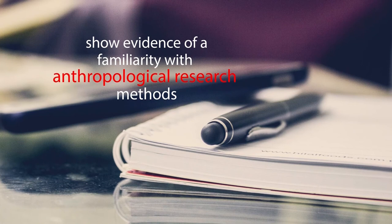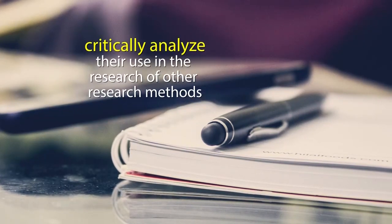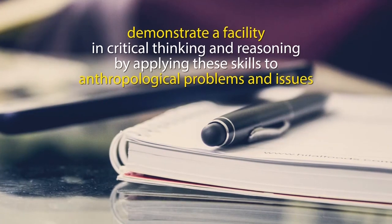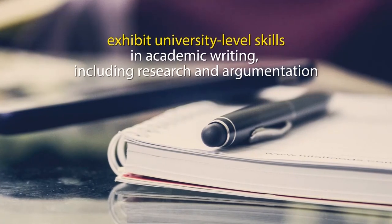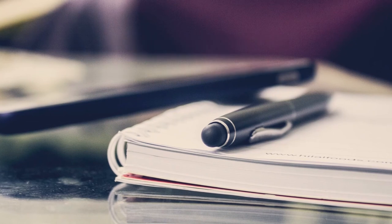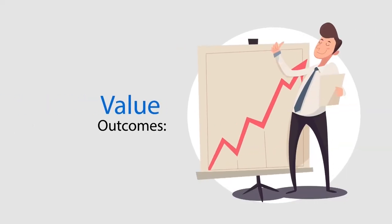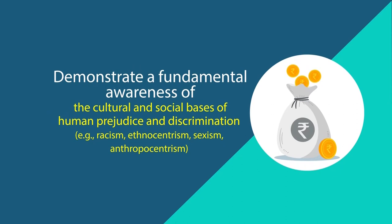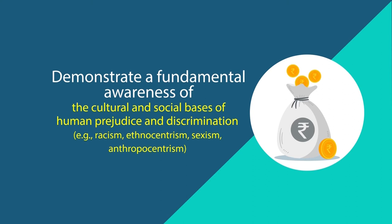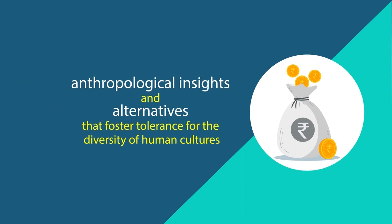Skills outcomes for the BA Anthropology program include: students should be able to show evidence of familiarity with anthropological research methods and critically analyze their use; demonstrate a facility in critical thinking and reasoning by applying these skills to anthropological problems and issues; and exhibit university-level skills in academic writing, including research and argumentation. Value outcomes include: students should be able to demonstrate a fundamental awareness of the cultural and social basis of human prejudice and discrimination — for example, racism, ethnocentrism, sexism, anthropocentrism — and anthropological insights that foster tolerance for the diversity of human cultures.